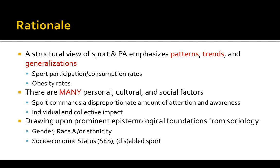Sport commands a disproportionate amount of attention and awareness, especially in American culture, and we really want to try to isolate and understand the individual and collective impact that these factors have on different levels of sport or physical activity consumption. Drawing upon the basic epistemological foundations from sociology and social science in general, we're going to talk about four main participation patterns, trends, and generalizations. One is going to involve gender, another race and ethnicity. Additionally, we'll talk about socioeconomic status or class, and then finally we'll look at the able-bodied disabled sport dichotomy.